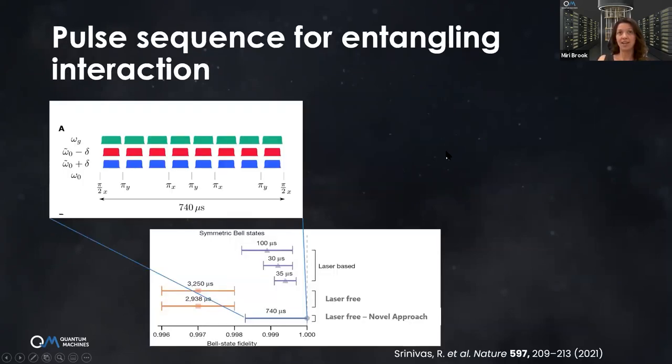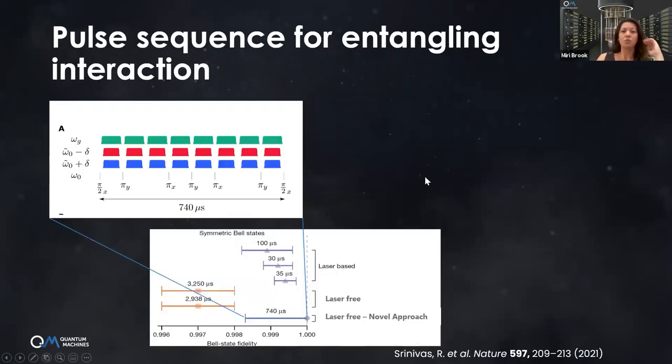We have the frequency tones, we generated them, we synced them, and we connect them to the electrodes. Now we need to generate the sequence to create the entanglement with this record fidelity I showed you before. Let's see how elegantly the sequence can be written, iterated over, and optimized with QOP. Let's take a look at such a building block of four frequency tones. We have the magnetic field gradient, the red and blue sidebands, and qubit drive at omega zero.